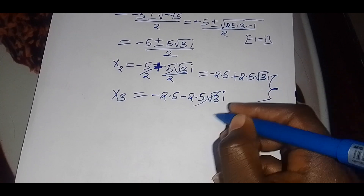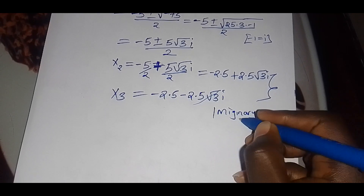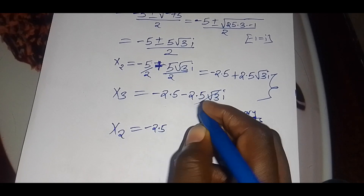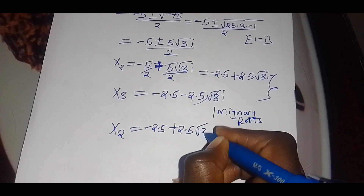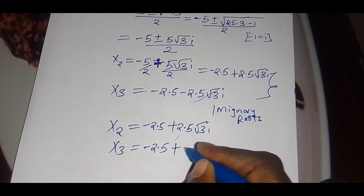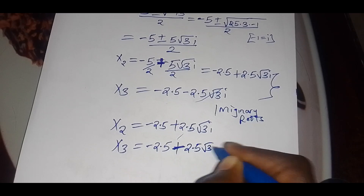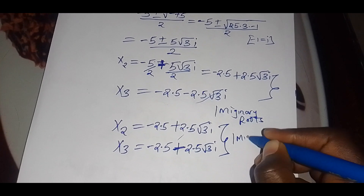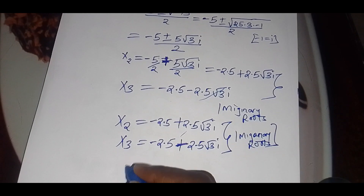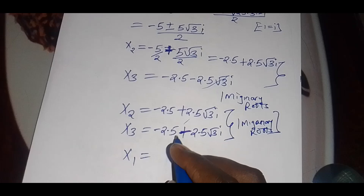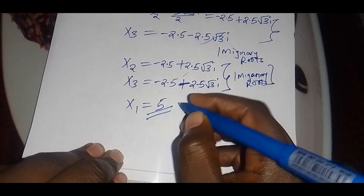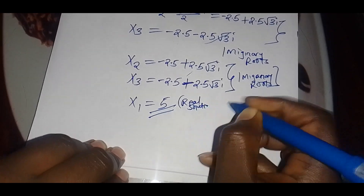These are two imaginary roots: x₂ equals negative 2.5 plus 2.5√3·i, and x₃ equals negative 2.5 minus 2.5√3·i. The only real root is x₁, which equals 5. So the value of x is equal to 5 — this is the only real solution.